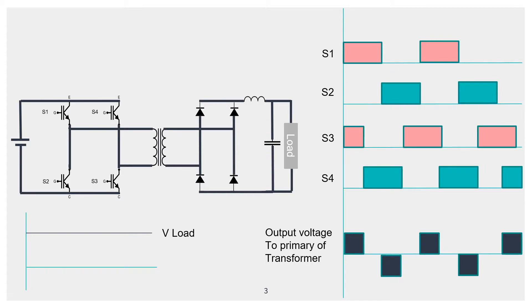When you pass AC voltage to a rectifier you get an average DC output, which is the voltage across the load — I've simply represented this as a straight line graph. Now to design the phase-shifted full bridge DC-to-DC converter, we need to first establish the input parameters.